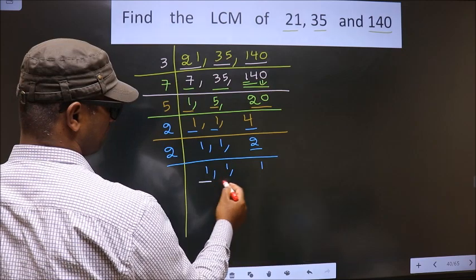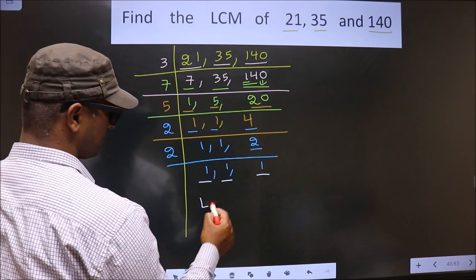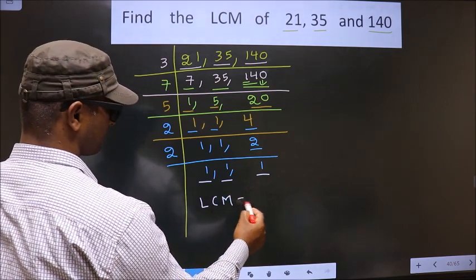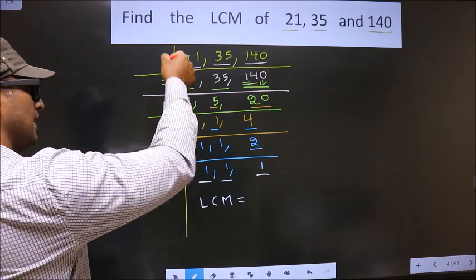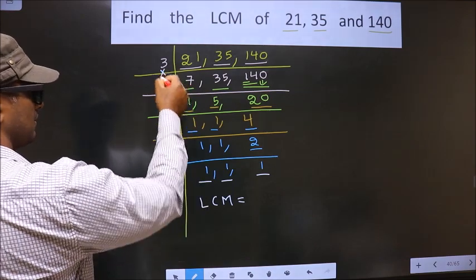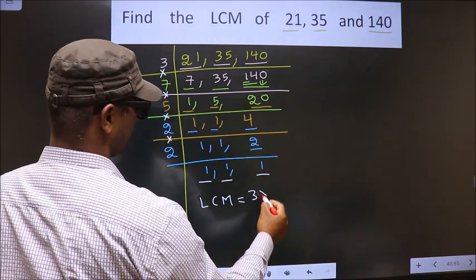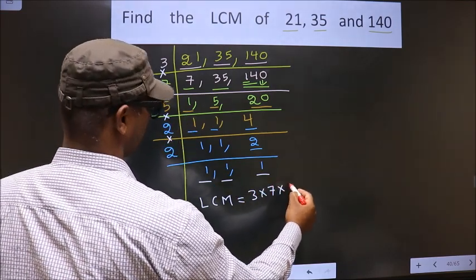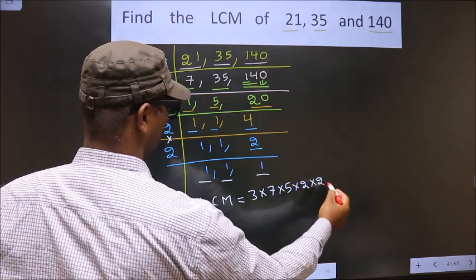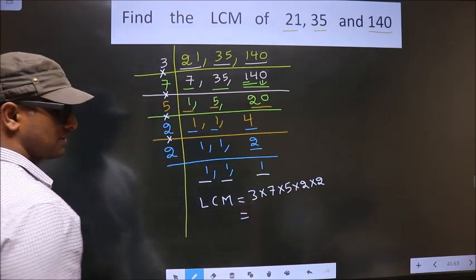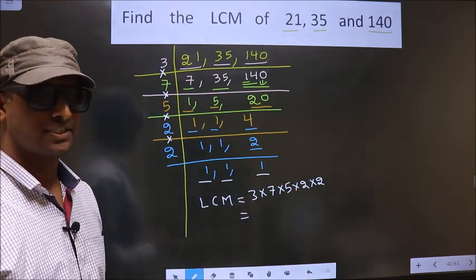Now we got 1 in all the 3 places. So now our LCM is, LCM is the product of these numbers. That is 3 times 7 times 5 times 2 times 2. You multiply all these numbers. Whatever number you get, that is your LCM.